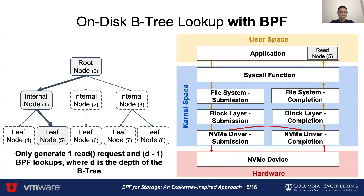With normal lookup, we will generate D read requests, where D is the depth of the tree. And with BPF, we only need to generate one read request and D minus one BPF lookups that bypass the kernel. If the tree depth is large enough, we will get better performance.